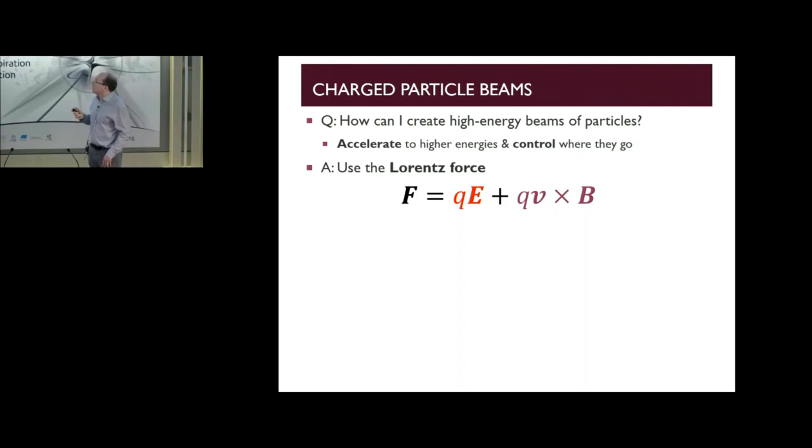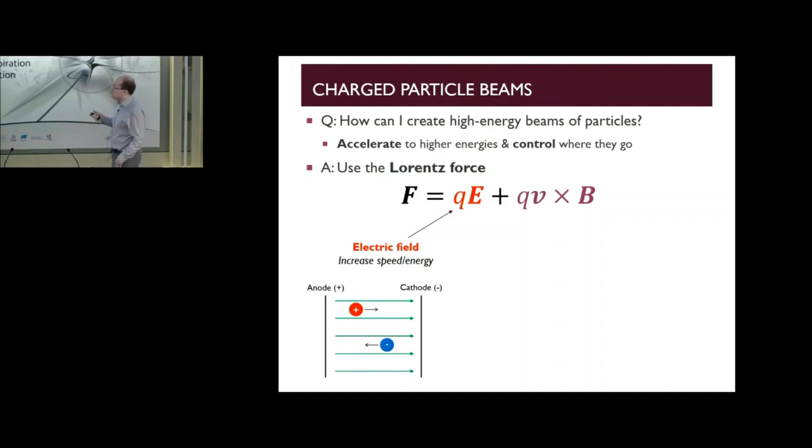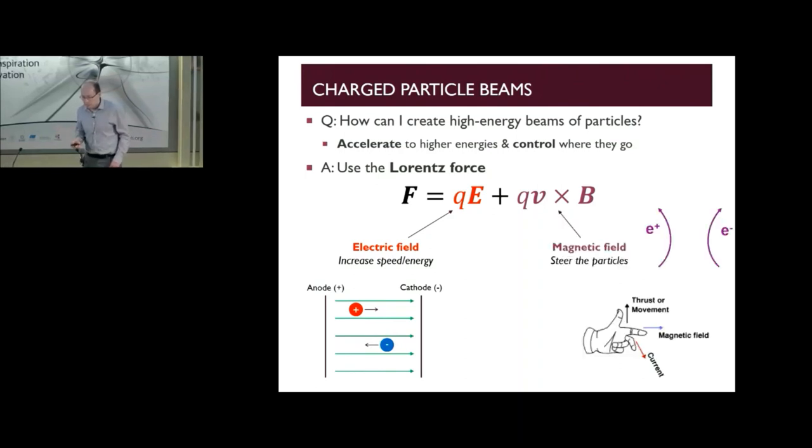If we start off looking at the first term in this equation here, the force from the electric field, we all probably know how to set up an electric field. You take two pieces of metal and attach a voltage source to them, and that will create an electric field in the space between the two metal plates. Positively charged particles will move in one direction, negatively charged particles in the opposite direction, and they'll be accelerated up to higher speeds and higher energies.